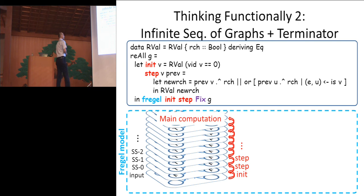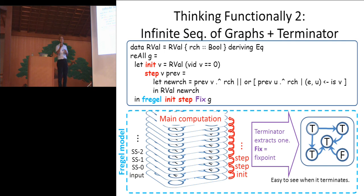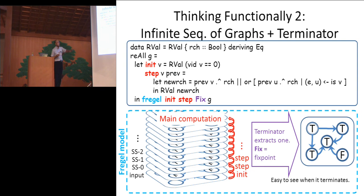Basically, this is the main computation. It makes an infinite list of graphs by mapping this step function. Then the terminator outside this computation extracts the final result according to the specified termination condition. In this case, fix is given as the termination condition, meaning we want to find the fixed point as the result. This is the computation model of our Fregel.